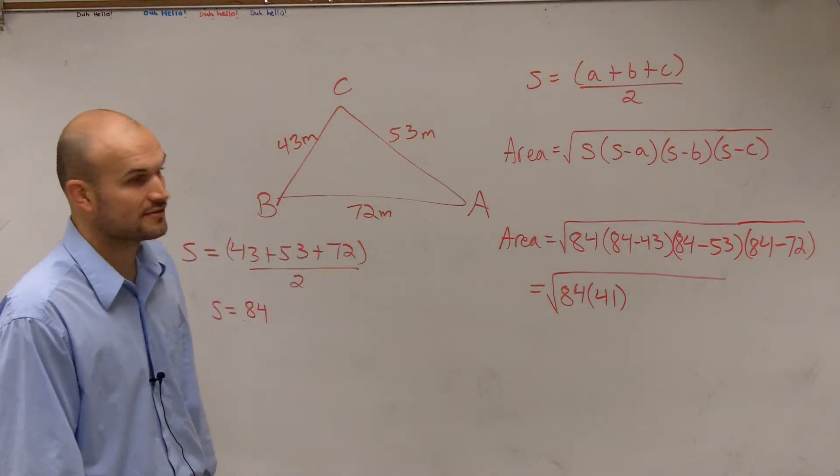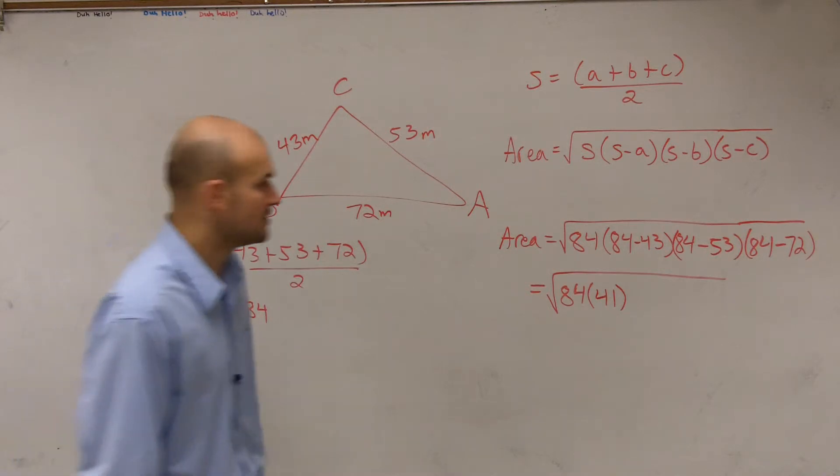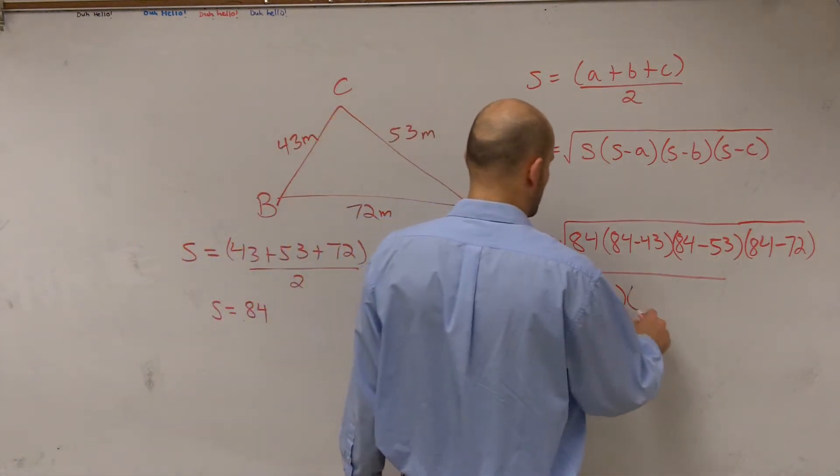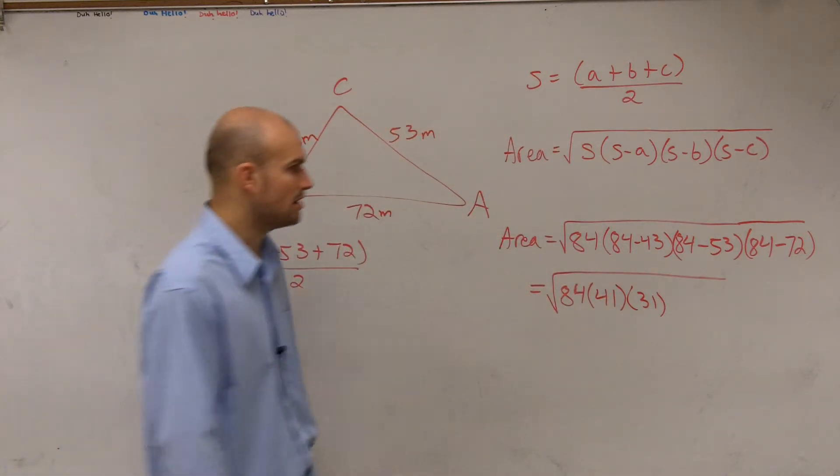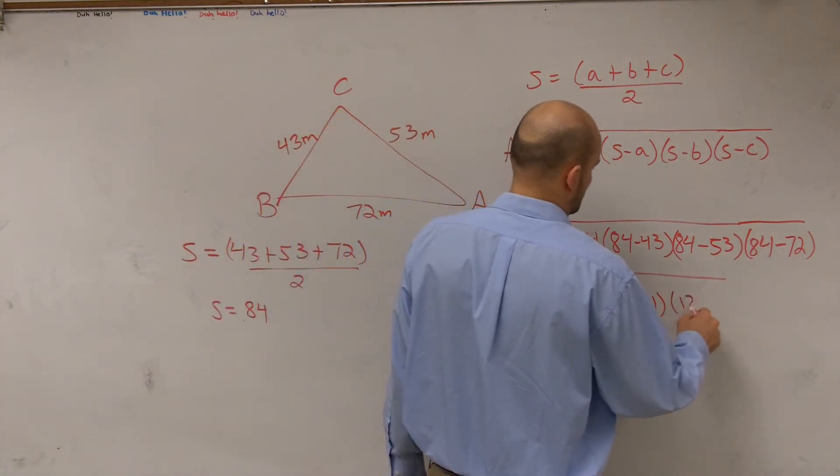84 minus 53, which is going to be 30, which is going to be 31. And then 84 minus 72 is going to be 12.